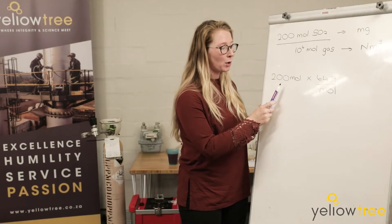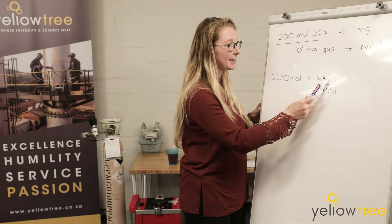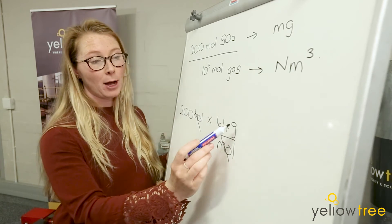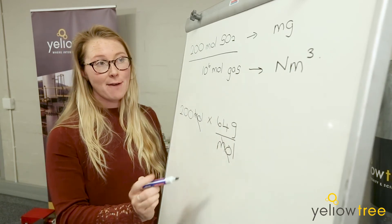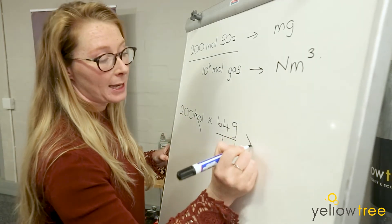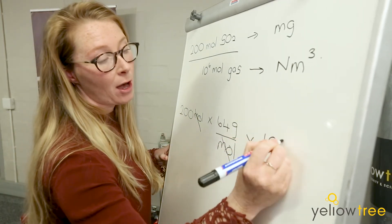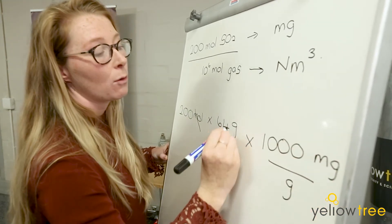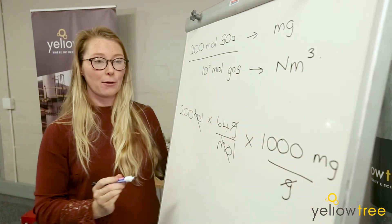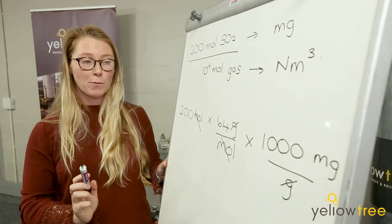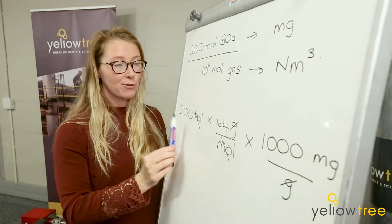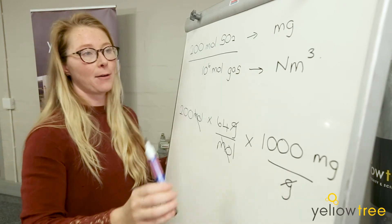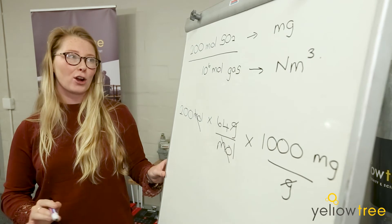So we have taken 200 moles, multiplied it by 64 grams per mole. This means that we can cancel out the moles and we are left with grams. However, we want milligrams, so we add another term. We know that there are 1,000 milligrams in one gram. We cancel out the grams and we're left with milligrams. So 200 moles of SO₂ is equal to 200 × 64 × 1,000 milligrams of SO₂. That's the first part of our equation done.